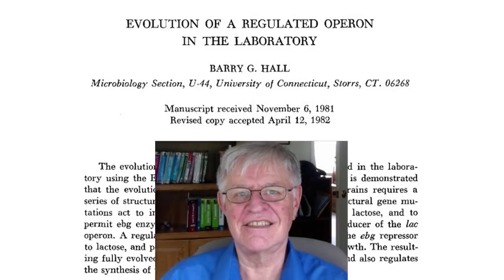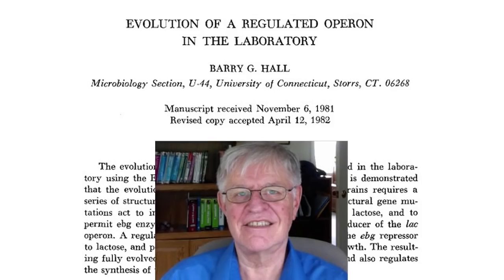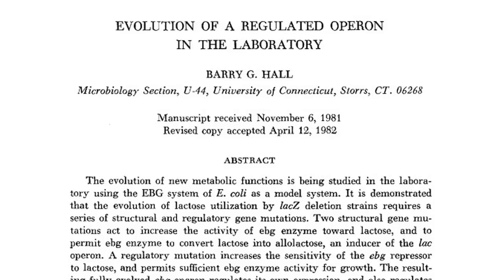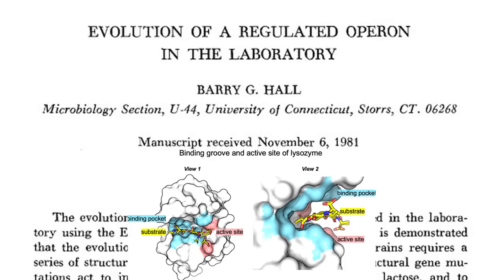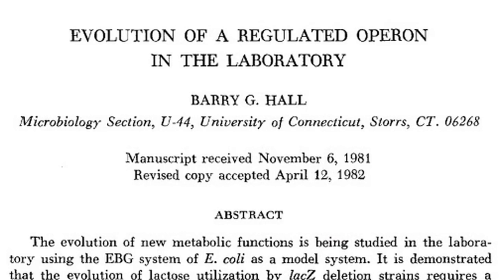Barry Hall performed an experiment with several colonies of a strain of E. coli. From these colonies, he destroyed the genes that catalyzed the enzymes responsible for ingesting and metabolizing sugar. Subsequent generations of this bacterium redeveloped the ability to use lactose for food. The population had gained two separate mutations that were not there before, allowing the bacteria to live on lactose.